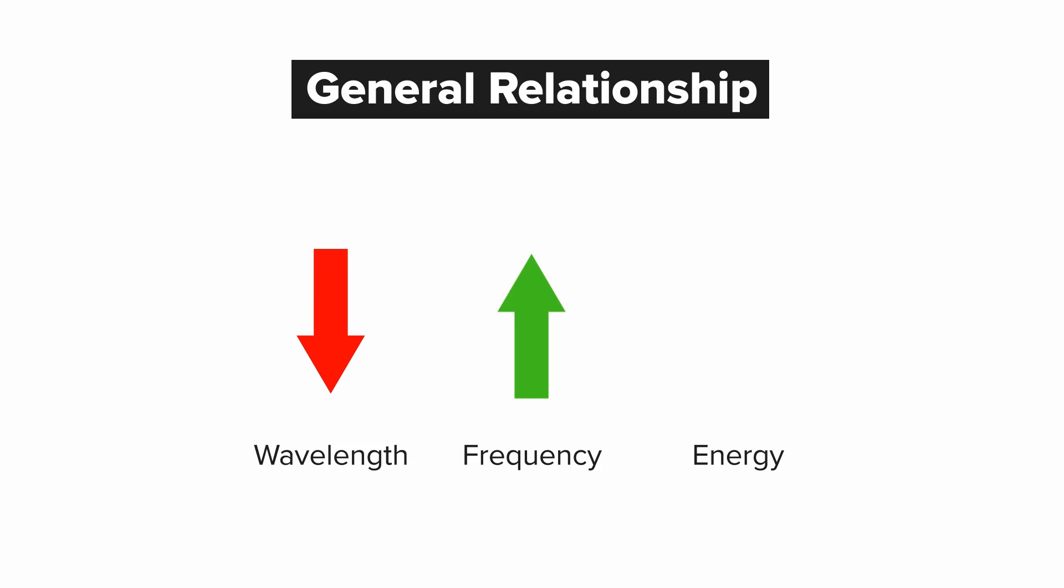So here's the general relationships that we need to understand. If the wavelength decreases, in other words, if the peaks of the wave get closer together, the frequency increases. That means there's more wave cycles per second. And the energy of the photon increases. Notice how there's no change in velocity. Simply changes in the wavelength and frequency. And that's what influences the energy.